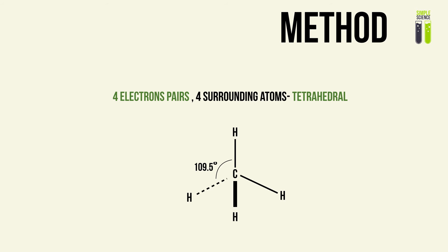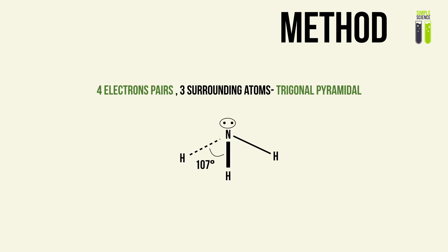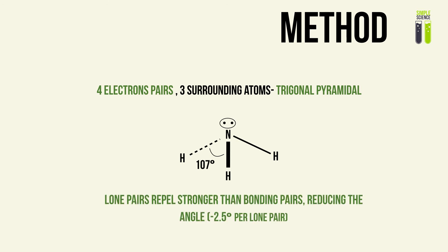Now, what happens if we take away one atom and end up with one lone pair of electrons? The shape will be different — we no longer have the top atom, so we end up with not a tetrahedron but a pyramid, more specifically a triangular-based pyramid. This shape is known as a trigonal pyramidal shape. The bond angle has decreased from 109.5 degrees to 107 degrees, because lone pairs repel stronger than bonding pairs. The lone pairs collapse the little pyramid at the bottom, causing the bonding angle to slightly reduce — at a rate of minus 2.5 degrees per lone pair.